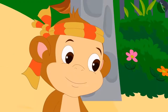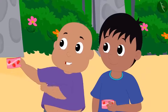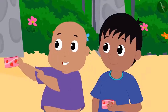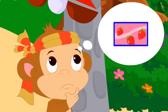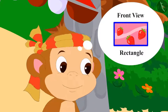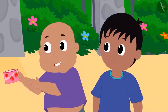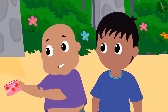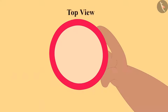Babban agreed. Bablu took an ice cream cup from Babban and asked, 'What is the shape of this ice cream cup?' Babban looked at the cup from the front and immediately replied, 'Rectangle.' Bablu then showed him the cup from above — that is the top view — and said, 'Wrong answer. This is a circle.'